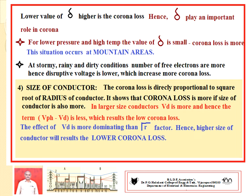The third factor is air density factor. Air density factor depends upon temperature and pressure present in the atmosphere. If the air density factor has a lower value, then corona loss is more. Hence, this air density factor plays a very important role in corona effect. Low pressure and high temperature result in a low air density factor value and more increase in corona loss. This situation occurs at mountain areas. During stormy and rainy or dirty conditions, number of electrons are more, hence disruptive voltage becomes lower, which increases corona loss.